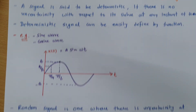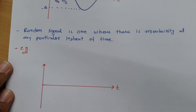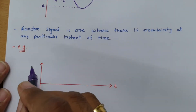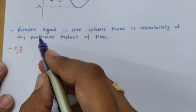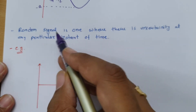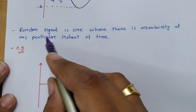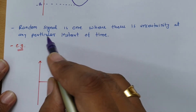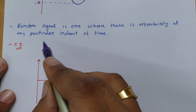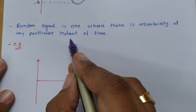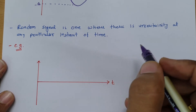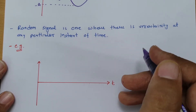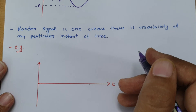Now let us move on to the second agenda: the random signal, or one can say the non-deterministic signal. A random signal is one where there is uncertainty of its value at a particular instant of time. If a signal has uncertainty at any instant of time, one can say that is a non-deterministic signal.